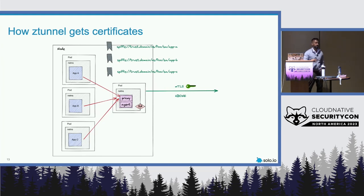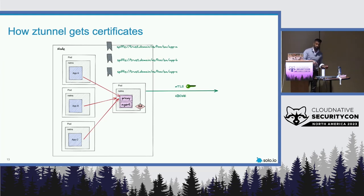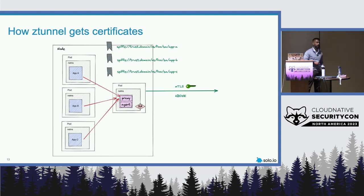If we have multiple workloads, that same Z-tunnel pod is going to service all the different workloads that exist on that node. There are different ways to scale that we're investigating. Istio Ambient Mesh is still experimental — not ready for production — because we're still scale testing and validating various use cases. In a failure scenario where the Z-tunnel pod goes down, Kubernetes will try to reconcile that, but there are many different reasons and varying failure conditions — like the node going down or getting disconnected from the network — that could contribute to that failure.